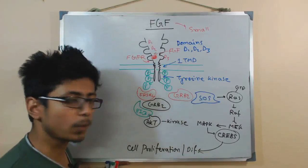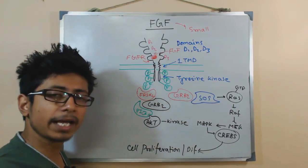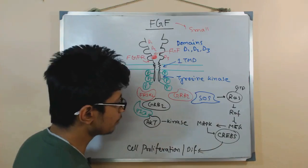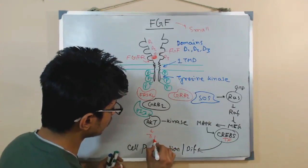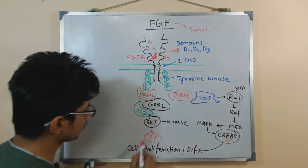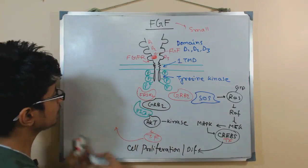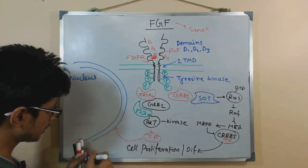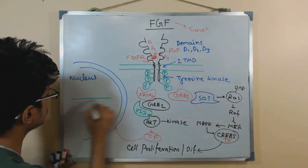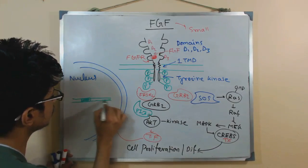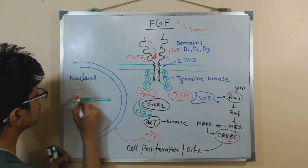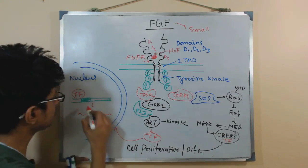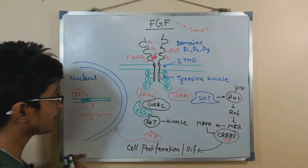AKT kinase is very important because once it is activated, it can help to recruit more and more transcription factors like CREBs. These transcription factors will go inside the nucleus. There is a gene inside the nucleus that needs to be transcribed. The transcription factor will sit on the promoter and help in transcribing an mRNA for that important gene — gene X. This is mRNA X.